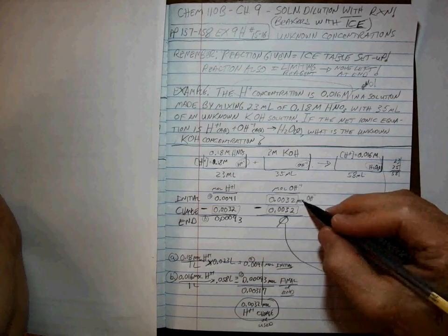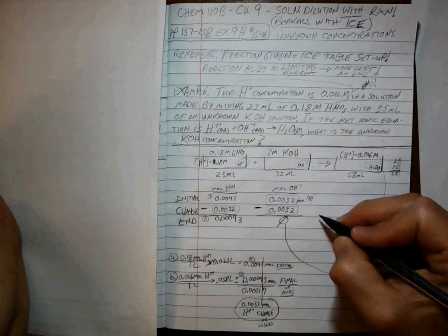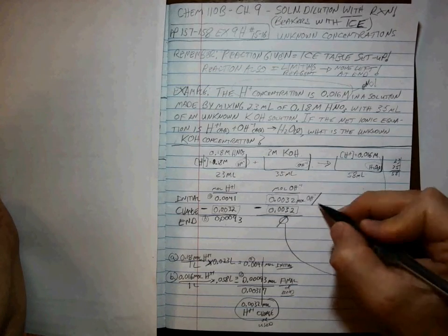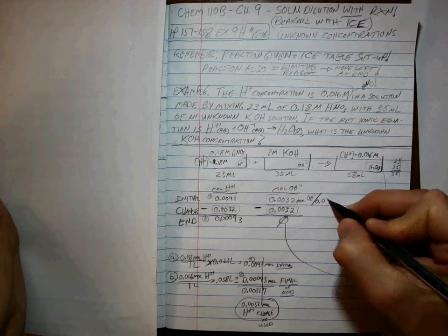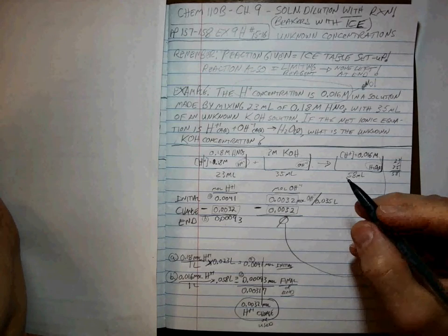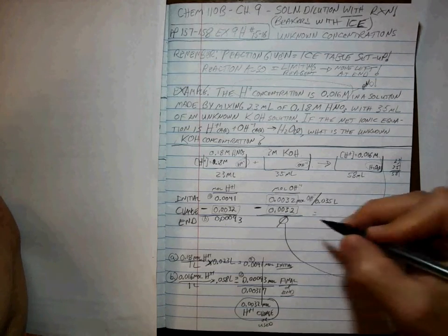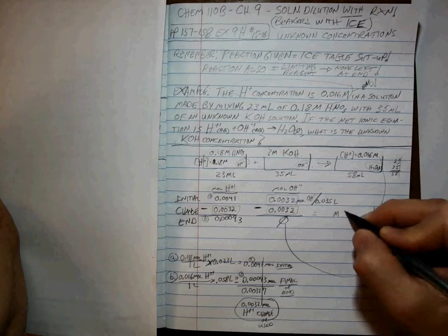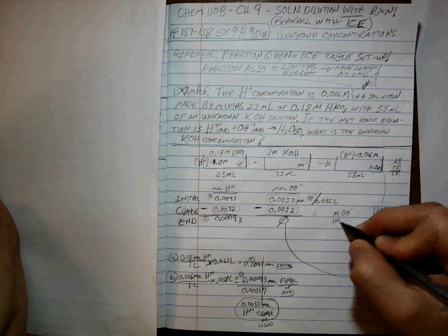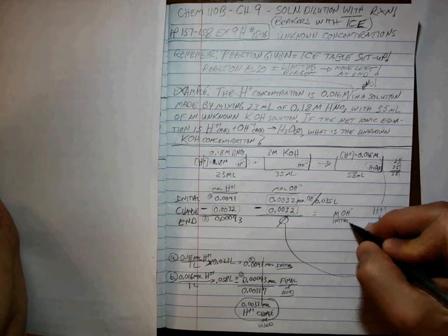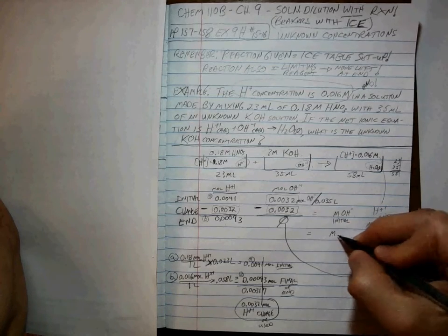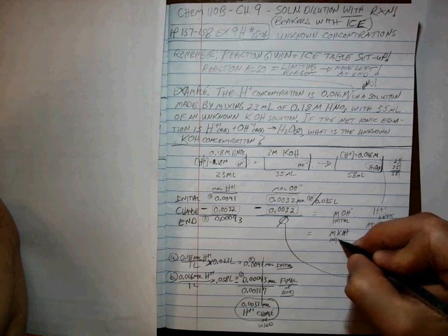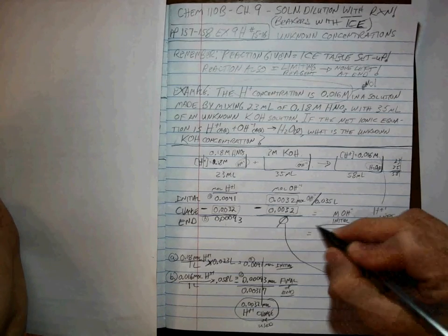Once you find out what that is, those two are going to be exactly the same. So this tells us the moles of hydroxide at the beginning. And if you know the moles of hydroxide initial and you divide by the volume initial, that gives us the molarity of the hydroxide initial, which is the same as the molarity of the potassium hydroxide initial, which is what we're trying to find.